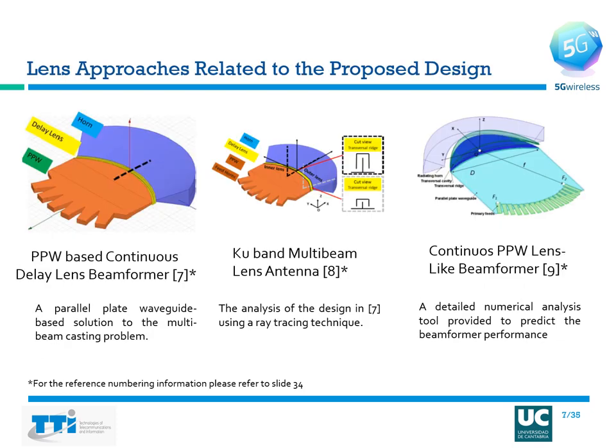Let us look at some recent lens approaches involving the use of a paraplate waveguide. On the extreme left is the design of a paraplate waveguide-based continuous delay lens beam former, where feeding horns feed into the paraplate waveguide, which is connected to a delay lens before radiating out the waves through a flared horn. The analysis is provided using a ray tracing technique in reference 8, and a detailed numerical analysis tool to predict beamforming performance is provided in reference 9.